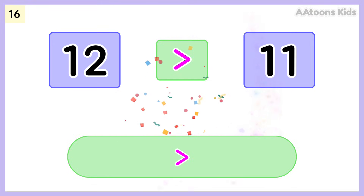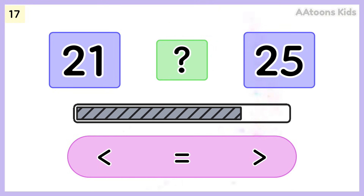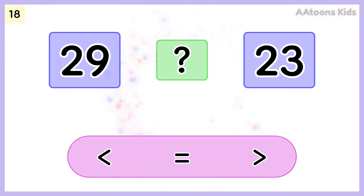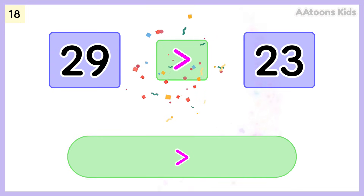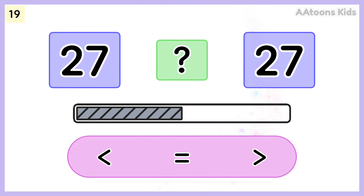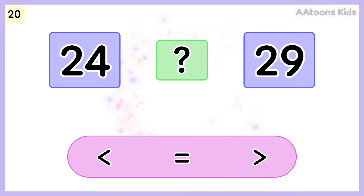Twelve is greater than eleven. Choose the correct symbol. Twenty-one is less than twenty-five. Pick the correct symbol. Twenty-seven is equal to twenty-seven. Pick the correct symbol.